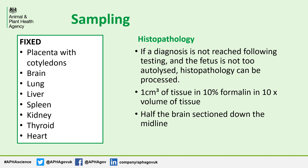If the fetus is fresh and not autolyzed then samples can be retained for histopathology. We only process histo if further investigation is necessary or for confirmation of Neospora pathology. Ideally we need one centimeter cubed of tissue in 10% formalin at 10 times the volume of tissue. Half the brain should be included split down the midline, placenta including cotyledon, and then a selection of all organs.